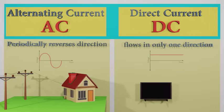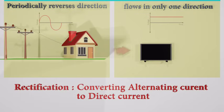Our homes get alternating current from the grid, but most of the modern electronics equipments are using direct current. So we need to convert the AC to DC. This process of converting alternating current into direct current is given the name rectification.